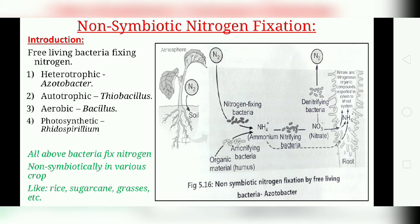The non-photosynthetic species tend to inhabit environments rich in organic carbon. Free-living bacteria fixing nitrogen can be categorized as: heterotrophic — example Azotobacter; autotrophic — example Thiobacillus; aerobic Bacillus; and photosynthetic — example Rhodospirillum. All of these bacteria fix nitrogen non-symbiotically in various crops like sugarcane, rice, grasses, etc.